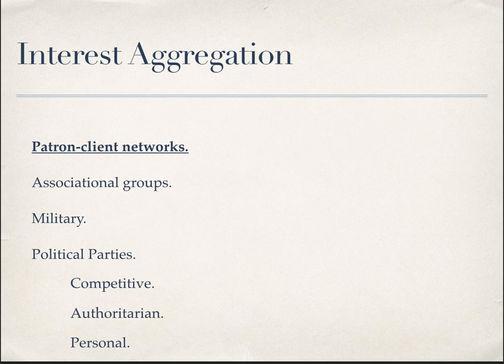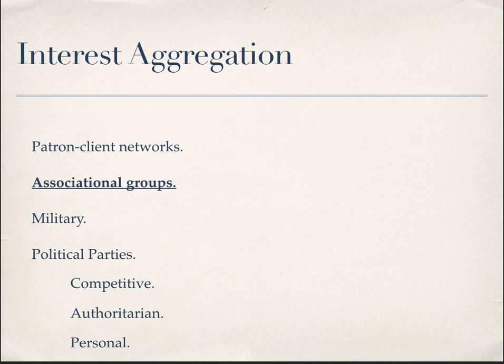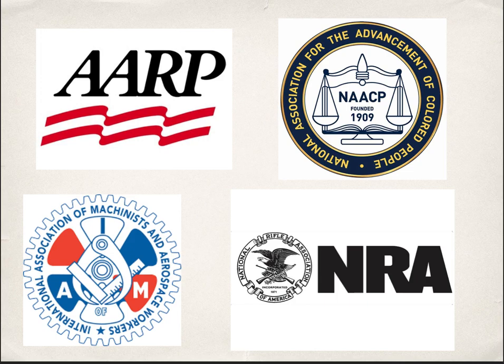Associational groups are more familiar in American politics. They are organized by an entrepreneur who sells membership on the grounds that the group will produce policies benefiting its members. Think of groups like the AARP, the NRA, or the NAACP — groups that have overcome the collective action problem, typically by offering selective incentives like credit cards, hotel discounts, or magazines. The true purpose is to create legislation that benefits retired people or gun owners.